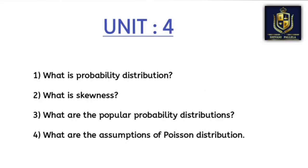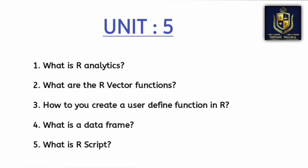From unit number three, Venn diagram is very much important — you have already learned about Venn diagrams from tenth class, so you can easily understand it. From unit number four, skewness is very important, and probability distribution is very very important. Skewness, Poisson distribution, and probability distribution — out of these three questions you can expect at least one definite question in Part A, or even two questions.